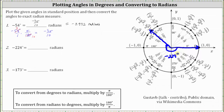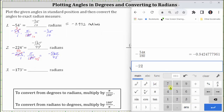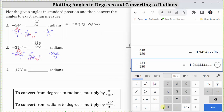And now to convert to radians, we multiply by pi divided by 180 degrees. The units of degrees simplify out, and the greatest common factor between 180 and 224 is four. There are 45 fours in 180, and there are 56 fours in 224. Let's go ahead and check this fraction using the calculator. We enter negative 224 divided by 180, click on the convert to fraction button, and notice how we do get the fraction: negative 56 pi divided by 45.